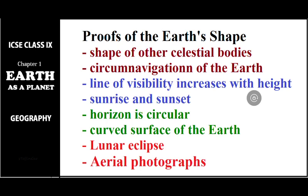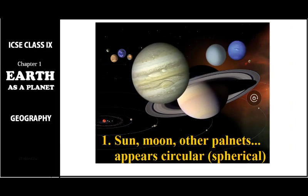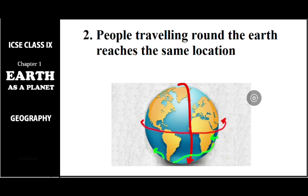The first proof is the shape of other celestial bodies. All celestial bodies we can see from the earth — like the sun, moon, and other planets — appear to be circular, meaning they are spherical in shape. Since we are part of the same solar system, scientists in earlier times came to the conclusion that the earth would also be the same shape.